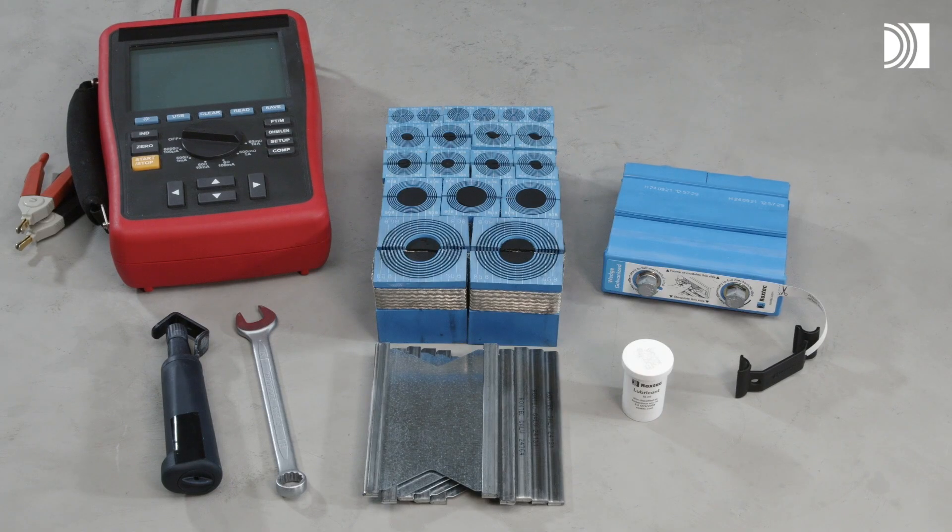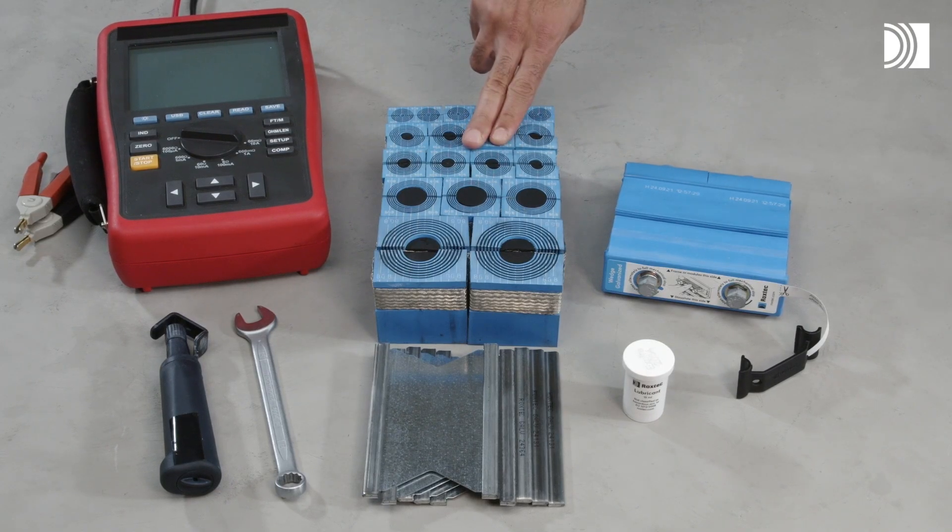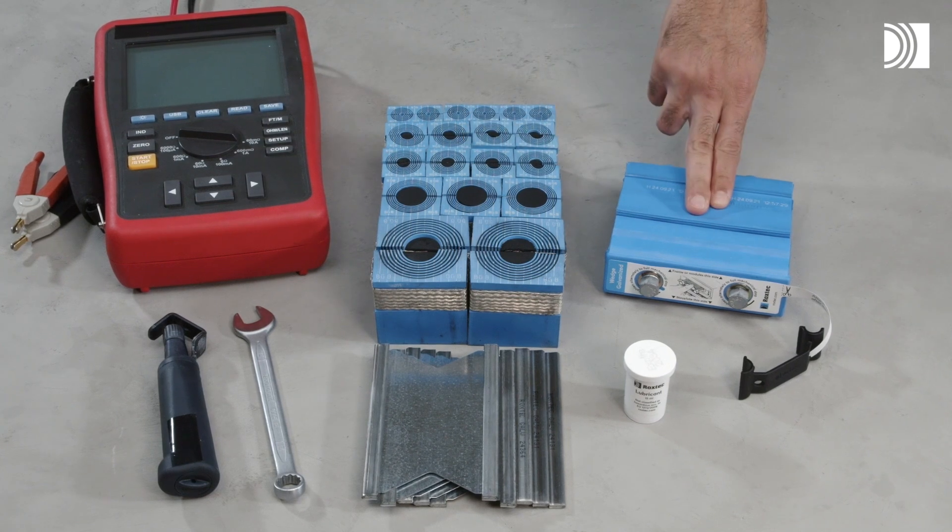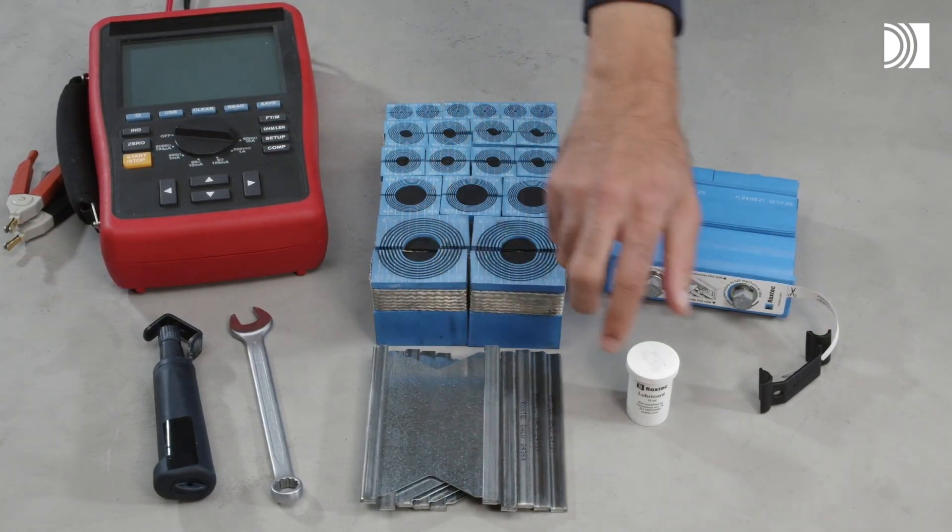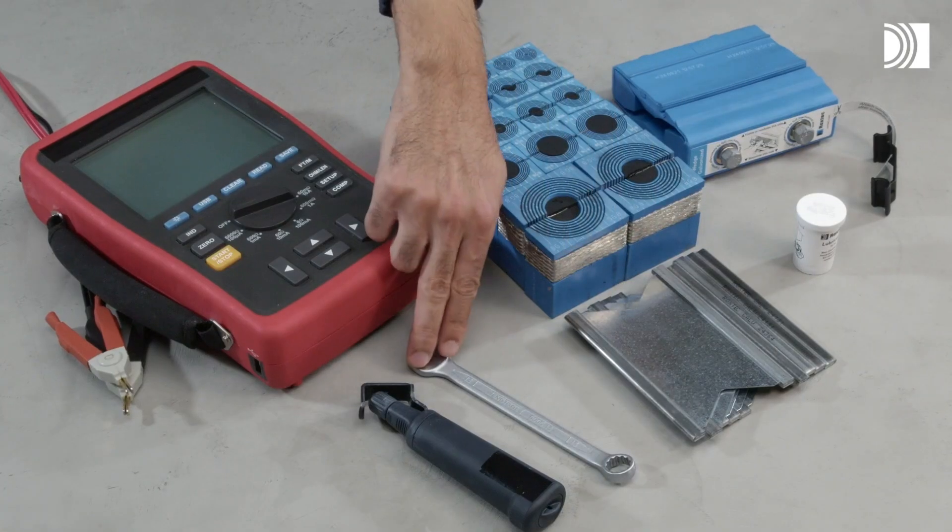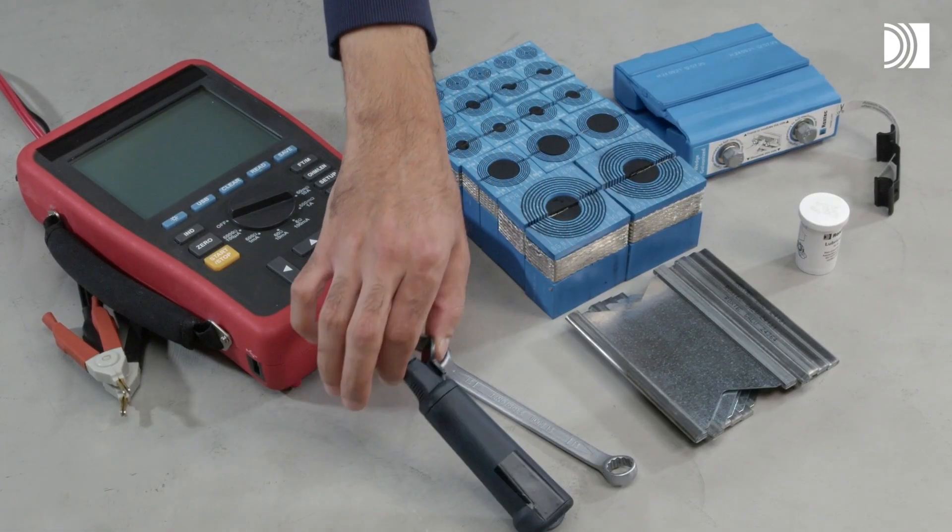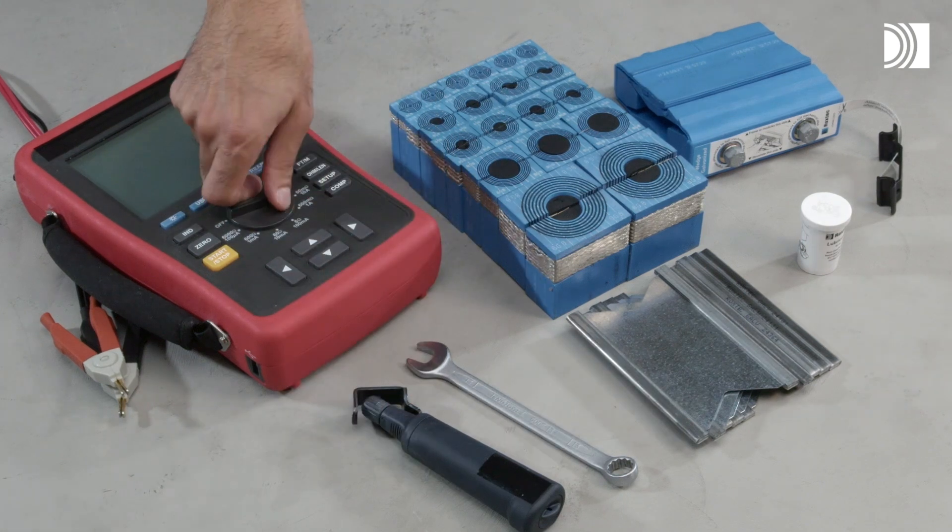you need Roxtec RMBGB sealing modules, a Roxtec wedge and wedge clip, Roxtec stay plates and Roxtec lubricant, as well as a 13mm spanner, a cable stripper tool and a continuity tester.